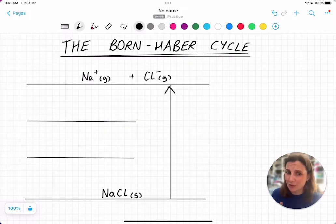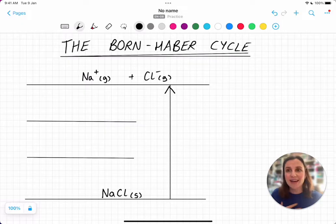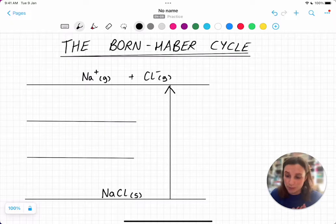Now, this is not something that we can really do in a lab to get an experimental value for lattice enthalpy. So what we do is we use a Hess cycle and some other things that we can do in the lab to predict what that lattice enthalpy would be. So let's label this up first. This is delta H lattice.